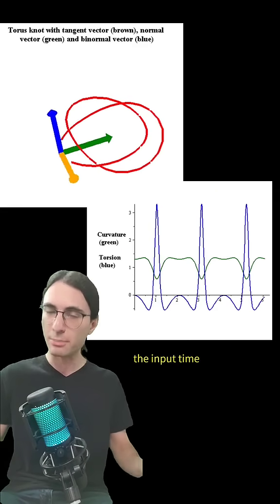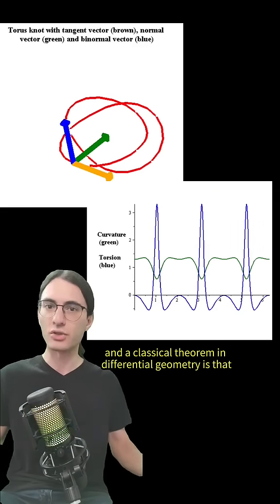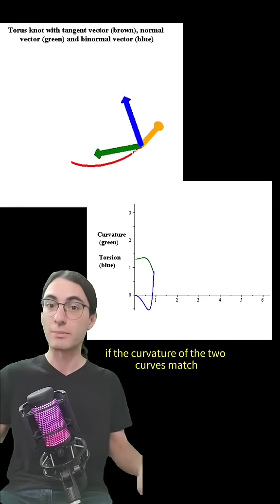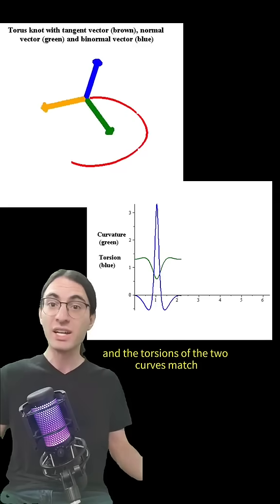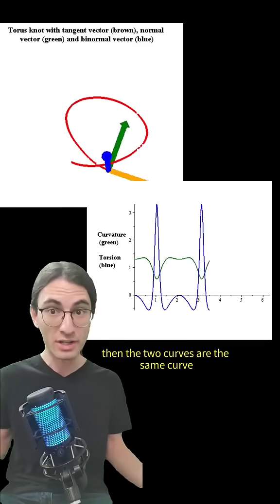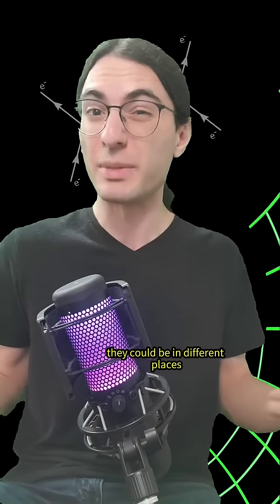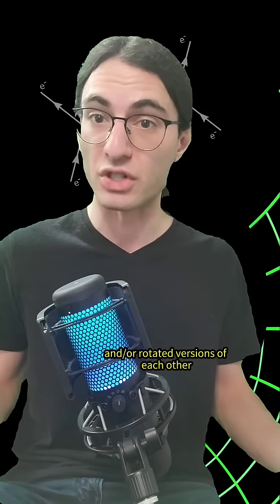These are both functions of the same thing, the input time. And the classical theorem in differential geometry is that if the curvature of the two curves match and the torsions of the two curves match, then the two curves are the same curve. The only possible difference between the two are that they could be in different places and or rotated versions of each other.